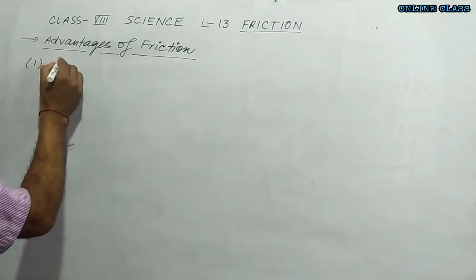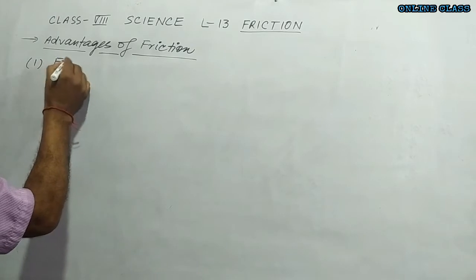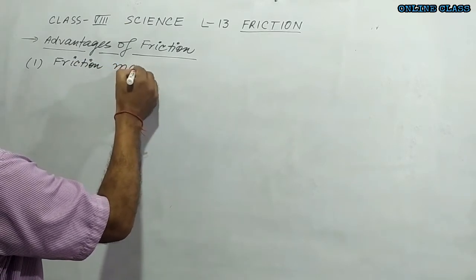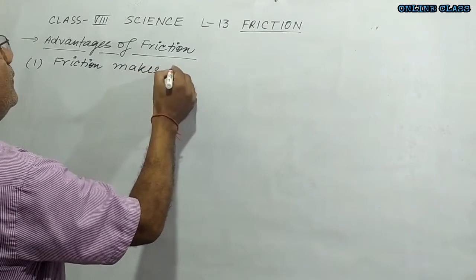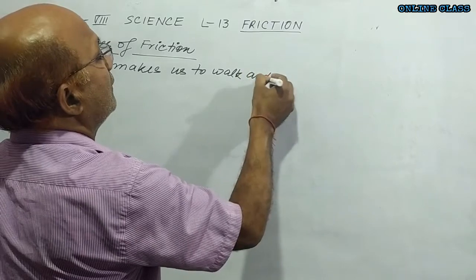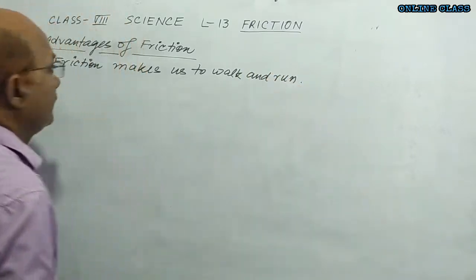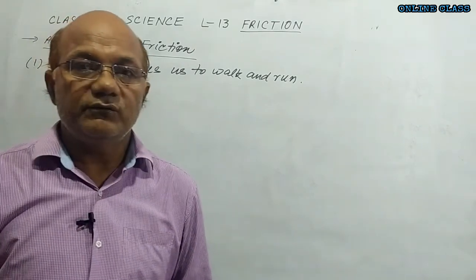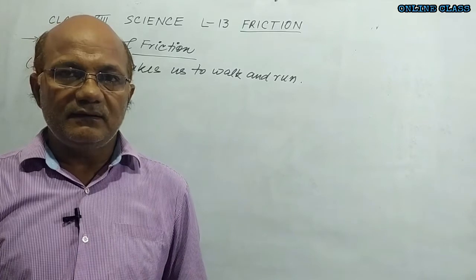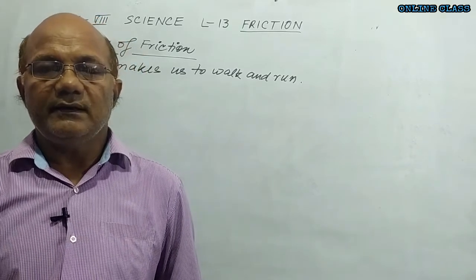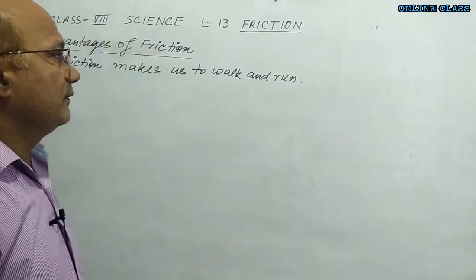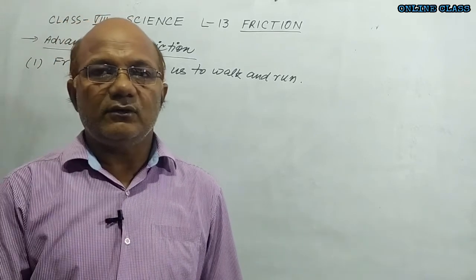Number one: friction makes us able to walk and run. Without friction, we cannot walk on the road or ground. The friction makes us walk and run on the ground or on the road. If the friction is reduced, we cannot walk on the road.